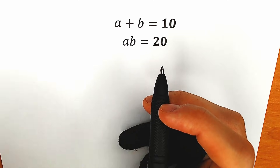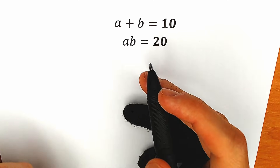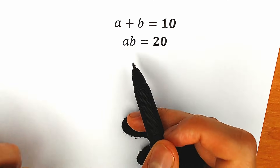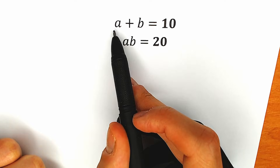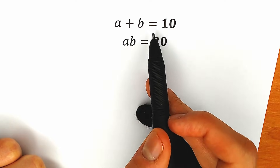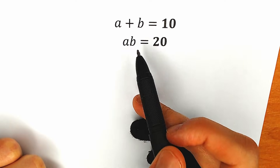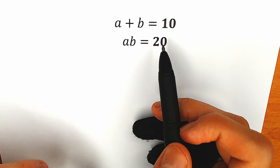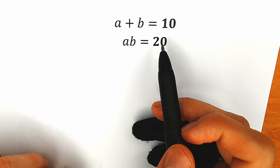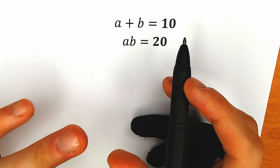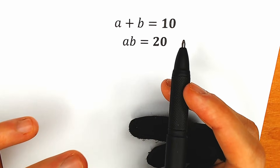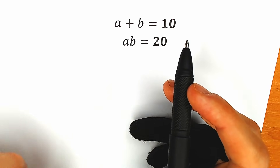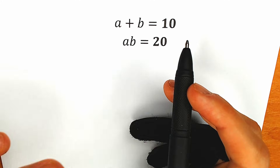Hello my friend, really glad to see you here. Today we have a really interesting and tricky algebra question. We know that the sum a plus b equals 10 and the product a times b equals 20. We need to solve for a and b. If you have your solution or assumption, you can write it in the comments below and we will check your answer.